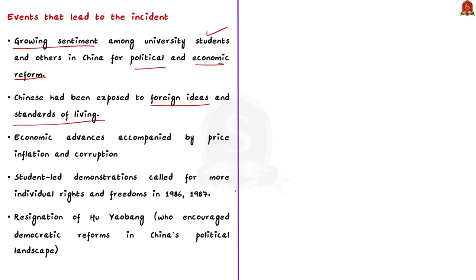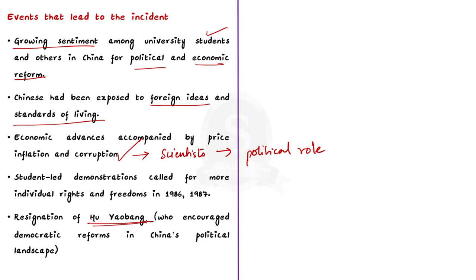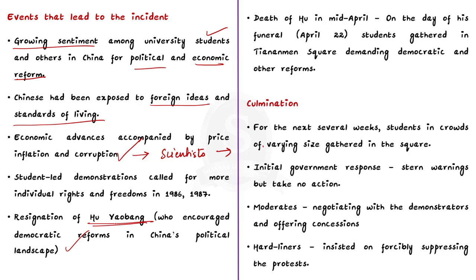In the mid-1980s, the central government had encouraged scientists and intellectuals to assume a more active political role. But student-led demonstrations calling for more individual rights and freedoms in late 1986 and early 1987 went against the hardliner stance, causing hardliners in the government and Chinese Communist Party to suppress this movement. A consequence was the resignation of Hu Yaobang, the CCP General Secretary since 1980 who had encouraged democratic reforms — he was forced to resign in January 1987.